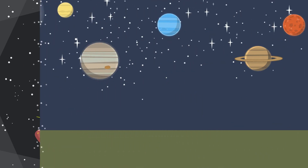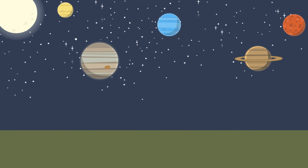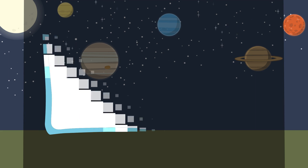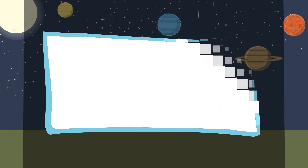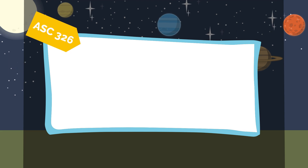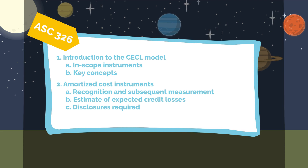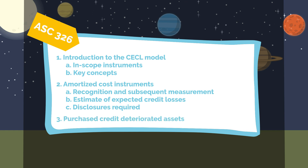In this module, we'll cover the concepts of the current expected credit loss model for financial instruments under US GAAP to help George understand how to estimate credit losses without using a time machine. We'll discuss what the CECL model is, the instruments subject to the guidance, recognition, subsequent measurement, key aspects of a credit loss estimate, and required disclosures. Additionally, we'll discuss the accounting for purchased credit deteriorated assets and certain beneficial interests.